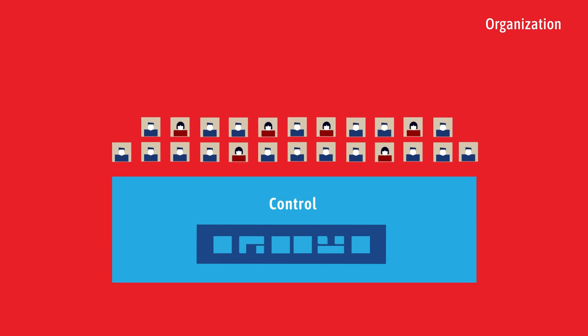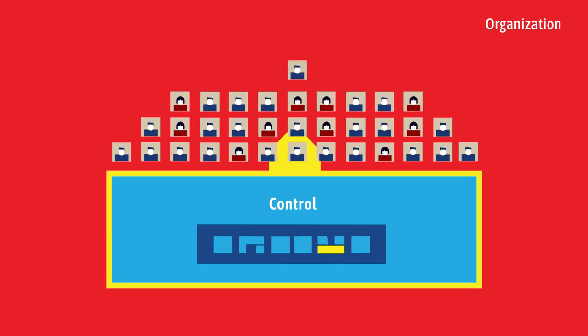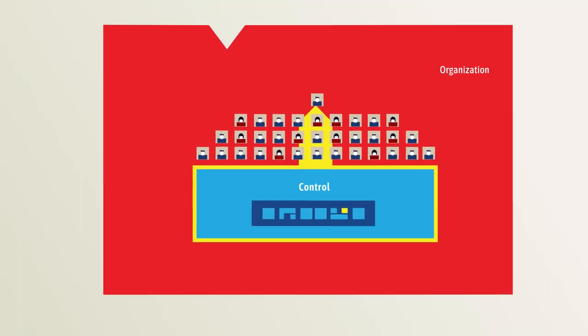Conversely, a well-aligned organization has processes that are designed around outcomes.